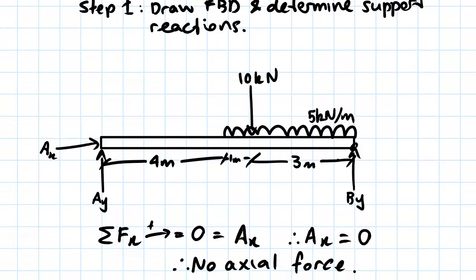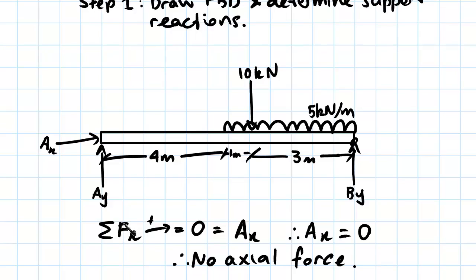We start off with the force in the x direction. We take the sum of the force in the x direction with left being positive, let that equal to zero, and since we only have one force in the x direction, this is AX.